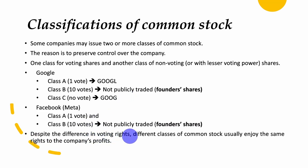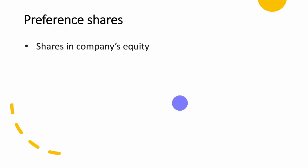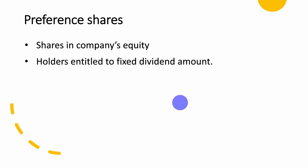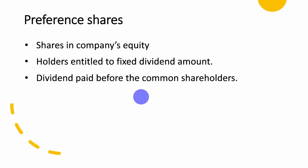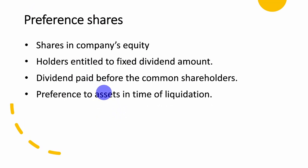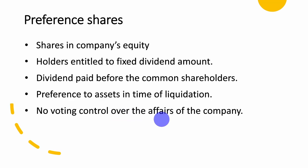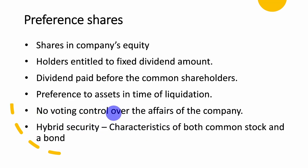Despite differences in voting rights, different classes of common stock usually enjoy the same rights to company profit — their dividends are mostly the same. Preference shares are shares in a company's equity, and holders are entitled to a fixed dividend amount paid before common shareholders — that is why they are called preferred stock. They also have preference in liquidation, with a prior claim on company assets before common stockholders, and they have no voting control over company affairs. They are also called hybrid securities because they have characteristics of both common stock and bonds.